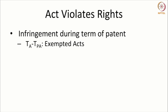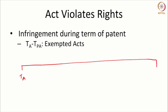The acts that violate the rights of a patentee are acts committed during the term of a patent. The term of a patent is a 20-year period that extends from the time of the application (Ta) till the time of expiry (Te). There is also a time of publication of the application, and the time of grant coincides with the second publication — the post-grant publication. The time of publication of the application is what we call the pre-grant publication.